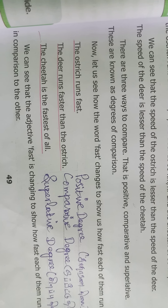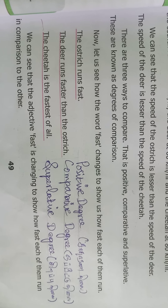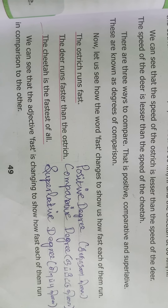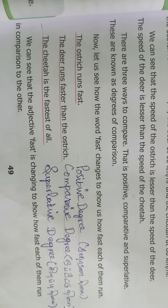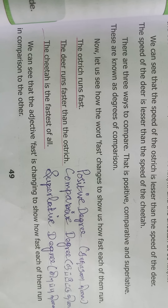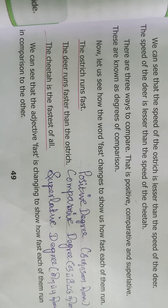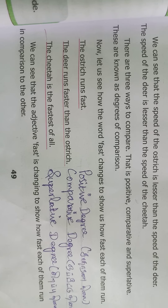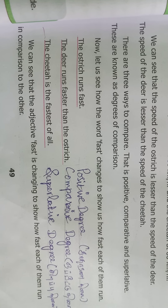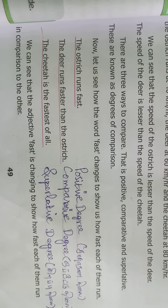Third one: superlative degree. The superlative degree refers to the greatest degree of an adjective. It is used to compare more than two objects, people or places. For example, 'the cheetah is the fastest of all.' 'The fastest' is superlative degree.